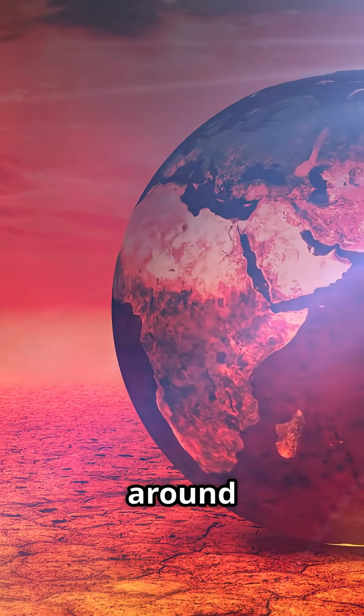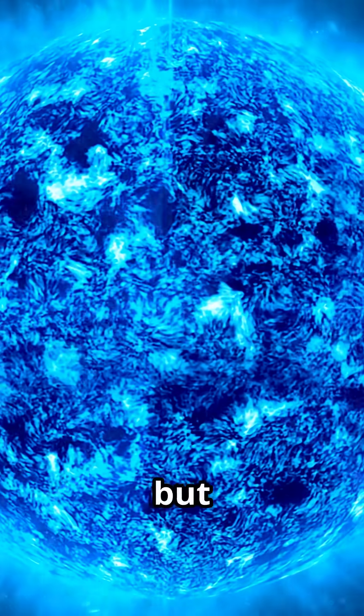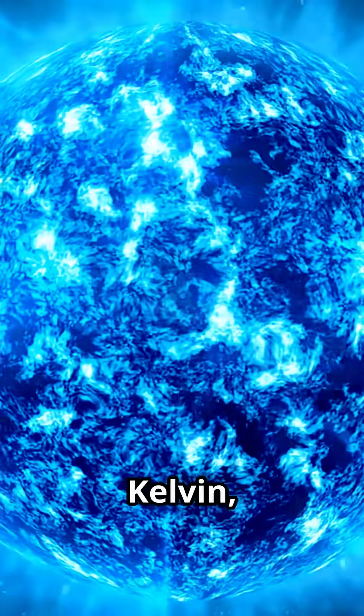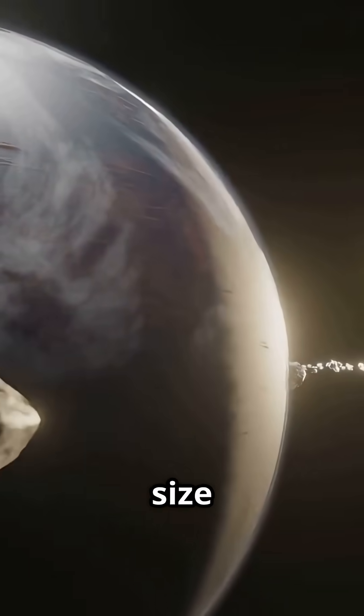Our sun's surface burns at around 5,800 Kelvin. But this extreme star blazes at a staggering 210,000 Kelvin, and it's only about half the size of our sun.